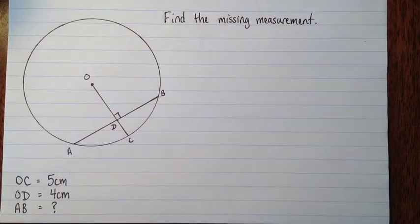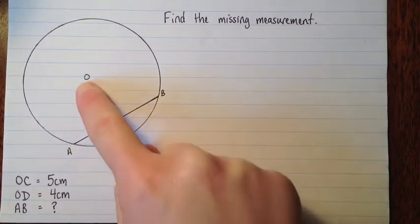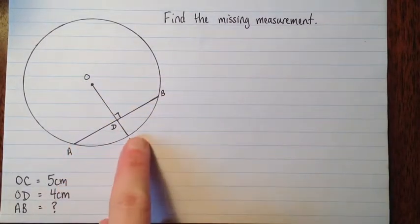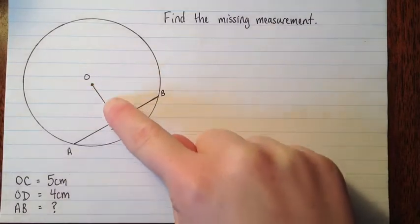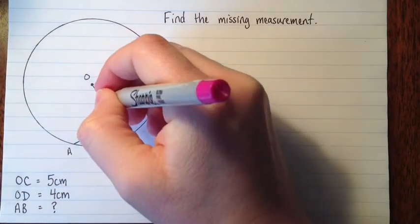Okay, this question asks us to find the missing measurement. It tells us that O to C, so from the center to the outside, so this is a radius of the circle, that's 5 centimeters, and it tells us that from O to D is 4 centimeters. So I'll label that 4 right away.